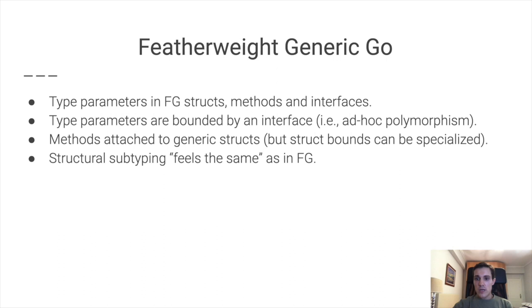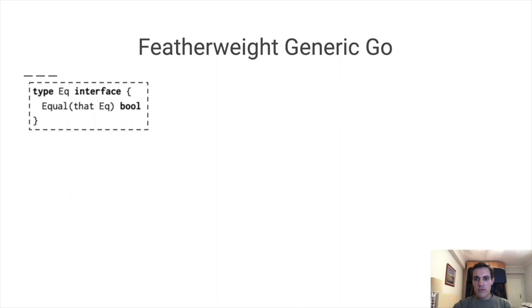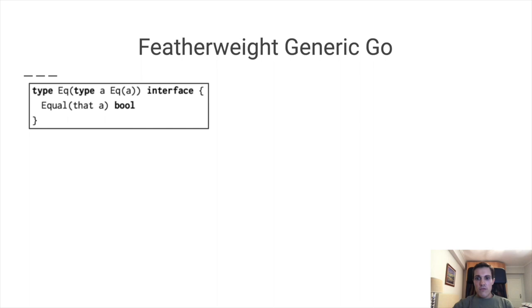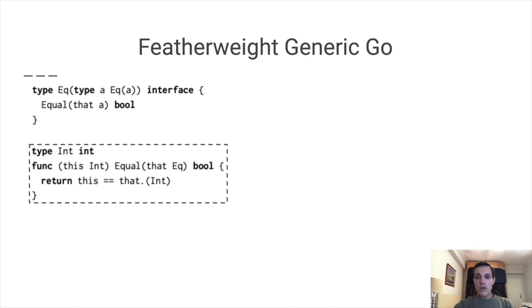Let's revisit our example of equality. This is the non-generic interface that you've seen before. Its generic version is parametrized by a type A, which is bounded by the interface EQ. The equal method now just takes a parameter of type A.